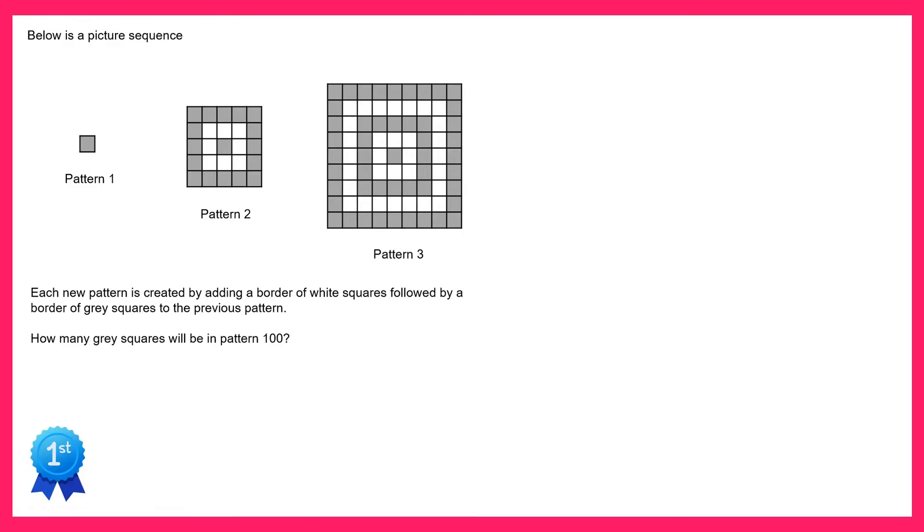So what we're going to do is write down how many grey squares there are in the patterns that we can see. So in pattern one there's one grey square, in pattern two if you count them up there are 17, and in pattern three if you count all of those you'll get 49. Now it might be useful to do pattern four as well and if you draw that out and count them up you'll find there are 97.